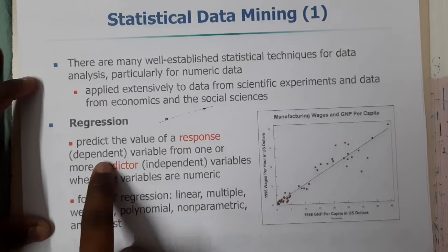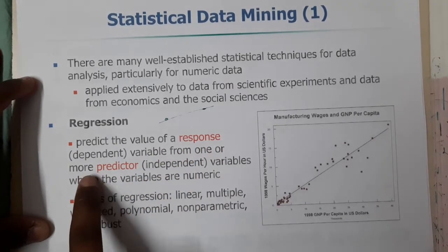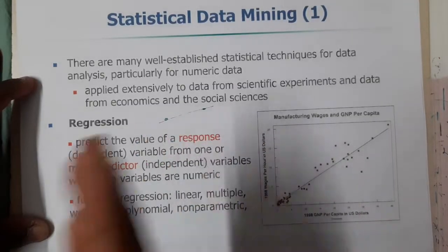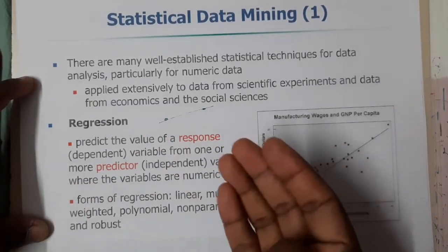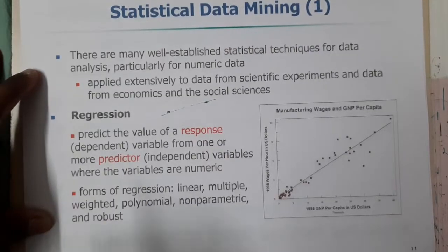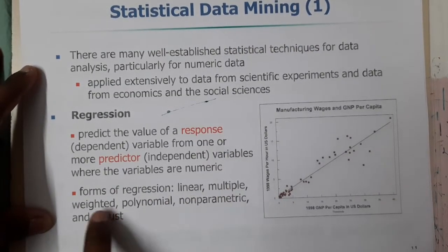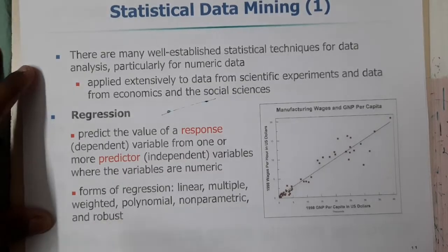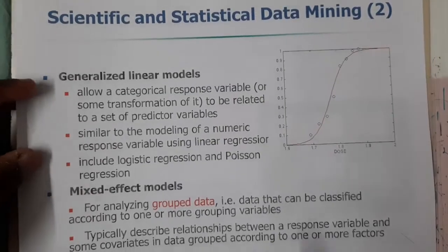Regression is predicting the value of a response — a dependent variable — from one or more predecessors, that is the independent variable. Based on some independent variables you calculate the dependent variable's value. Forms of linear regression include: linear, multiple, weighted, polynomial, non-parametric, and robust. Among them, linear regression is the most popularly known.